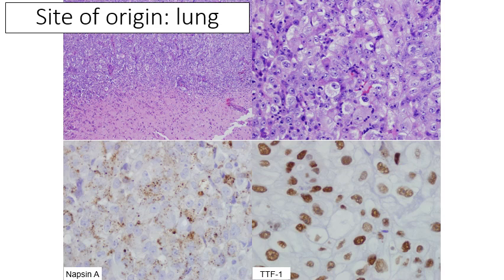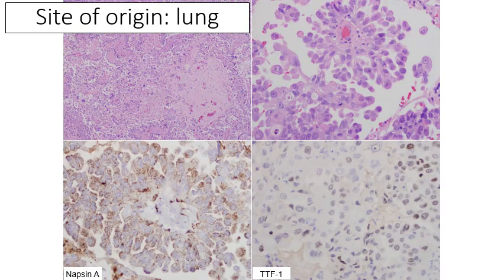Here's a brain metastasis that is positive for TTF1 and napsin. Showing PAX8 negativity would prove lung origin to the highest degree possible. In another metastatic tumor example, napsin is pretty strongly positive while TTF1 is only weakly positive. It's not very common for napsin to outperform TTF1, but it does happen — which is one argument for using both TTF1 and napsin together. In this case, the site of origin was confirmed as lung.